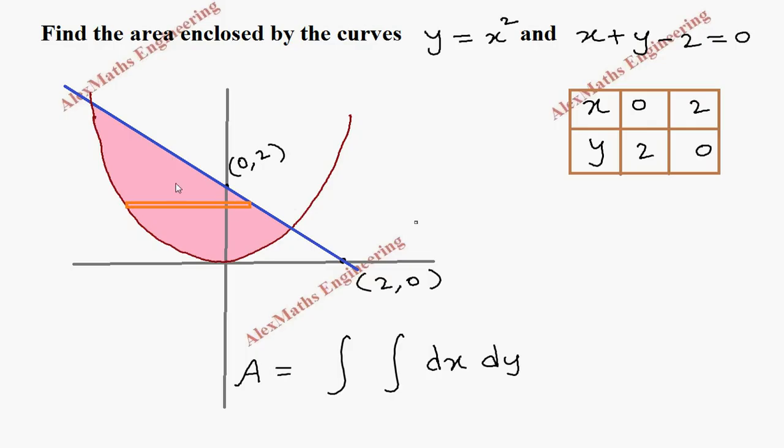But again, if I take another strip here, it touches the parabola itself. So to avoid this confusion, let's take the vertical strip. So I have to interchange these two. First I have to write dy, then dx. So I am going to consider the vertical strip.